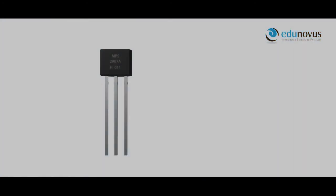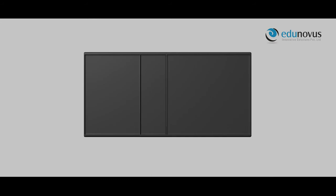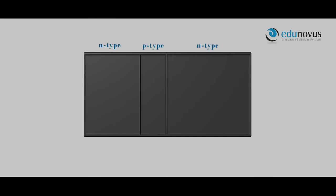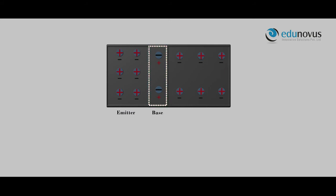In the real world, the transistor looks like this, and in the circuit diagram an NPN transistor is represented this way. In an NPN transistor, a P-type semiconductor is sandwiched between two N-type semiconductors. The first thick layer is called the emitter, which is heavily doped. The second thin layer is lightly doped, and the third layer is the collector. The collector section is larger than the emitter section.